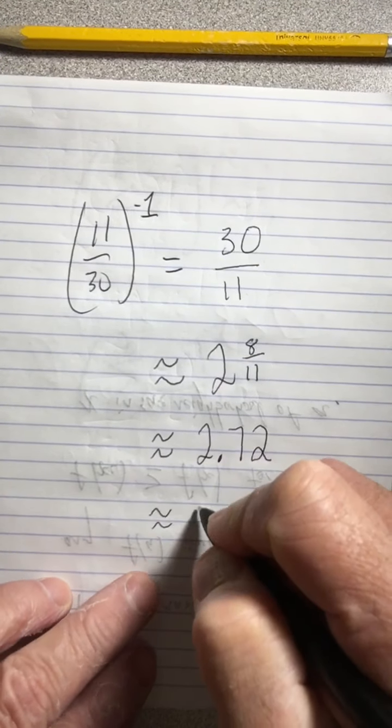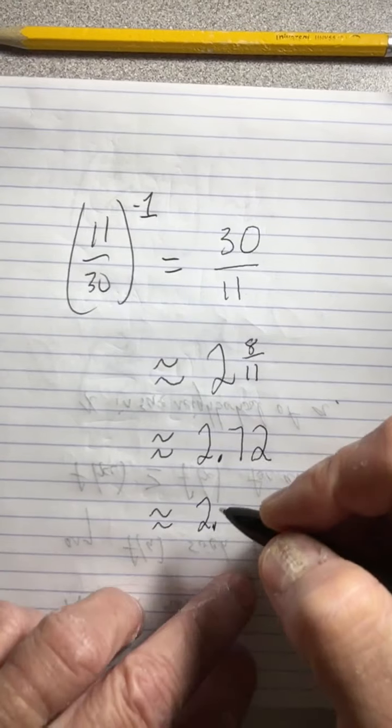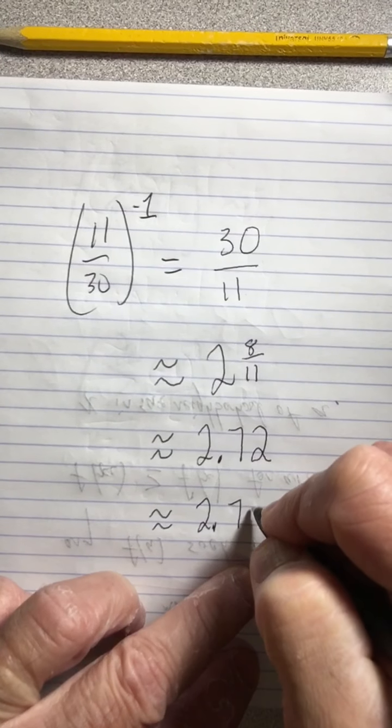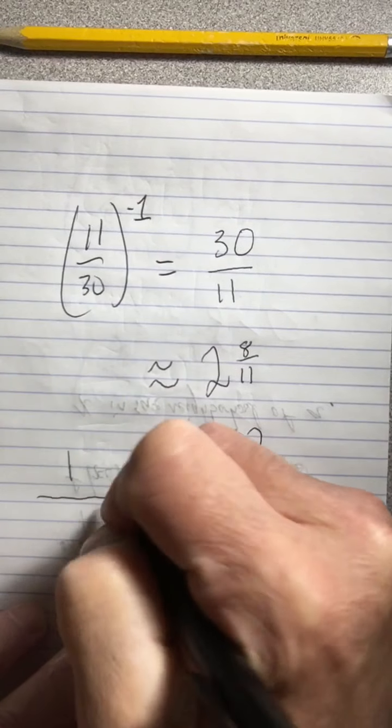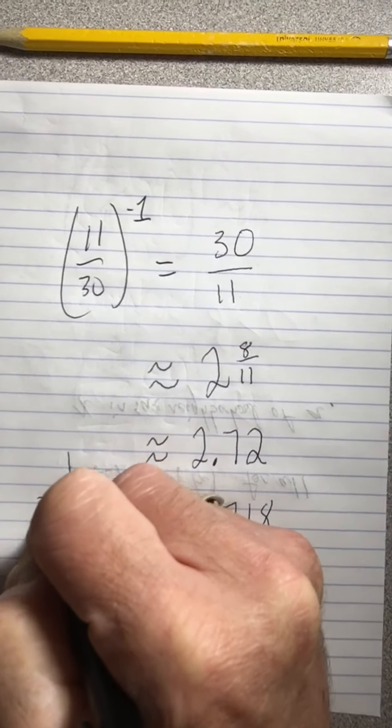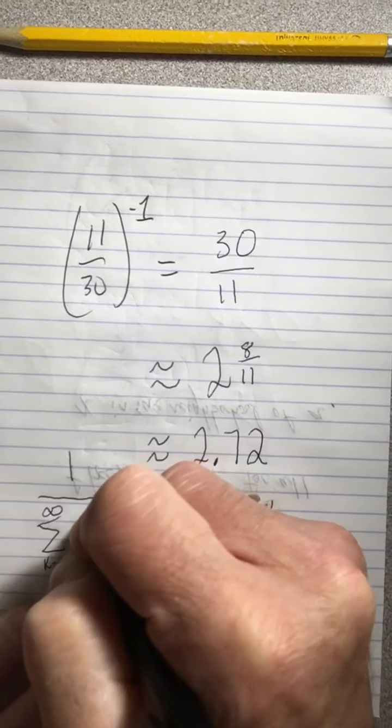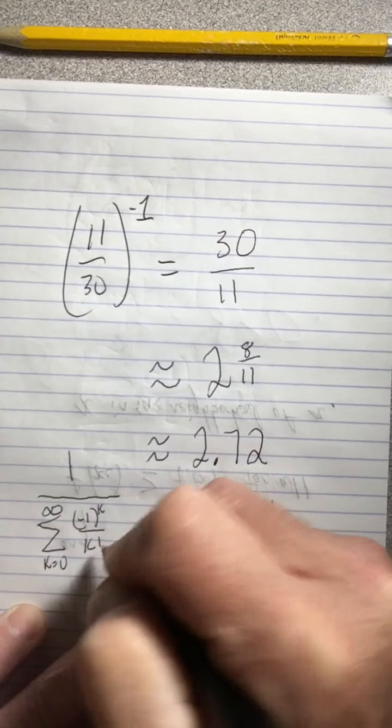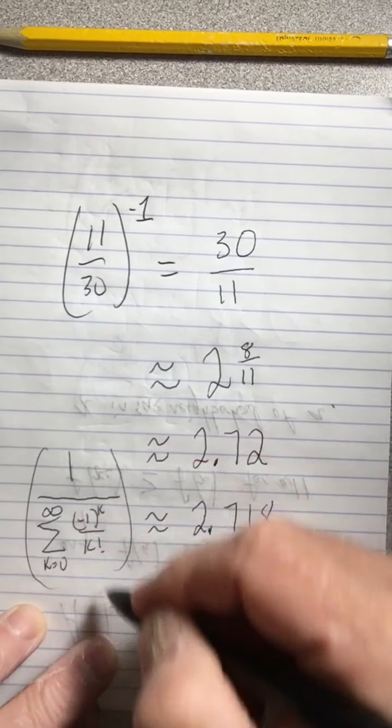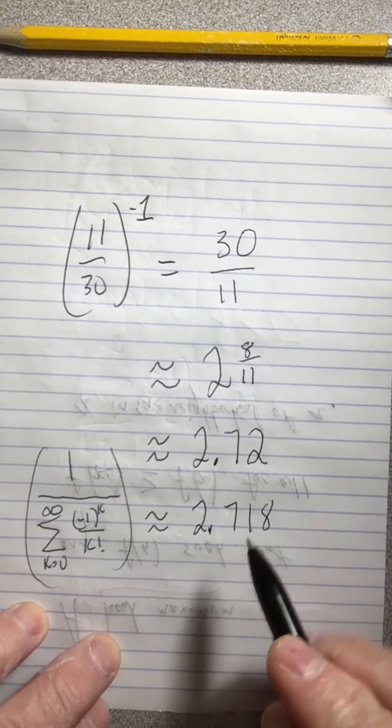In fact, it rounds, if you round to the nearest thousandth place, to 2.718. How about that? So one over that series, that infinite series starting at zero, that's negative one to the K over K factorial, this fraction here is approximately 2.718.